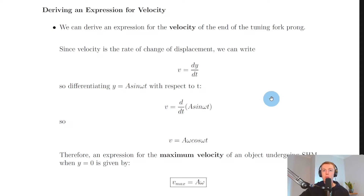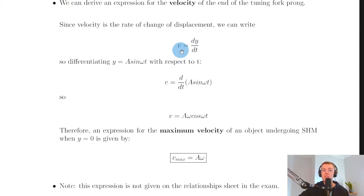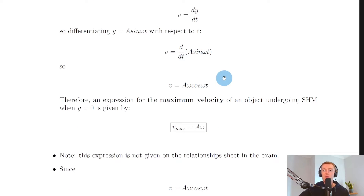If we assume the tuning fork prong starts from its equilibrium position at time t equals zero — i.e. its initial condition — then we can think of the displacement expression as y equals a sin(ωt). Therefore, if we differentiate this to get an expression for velocity, we get v equals d/dt of a sin(ωt). Differentiating once with respect to time, the sine becomes cosine and we multiply by ω, giving v equals aω cos(ωt).